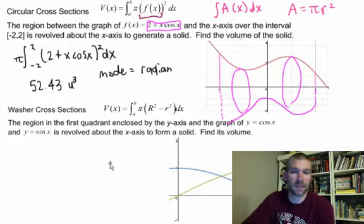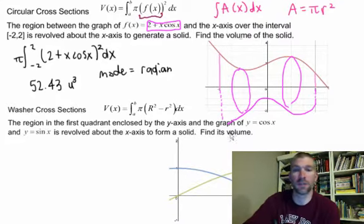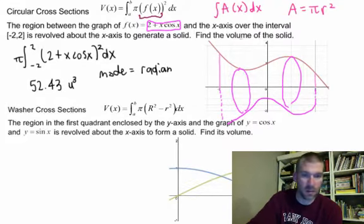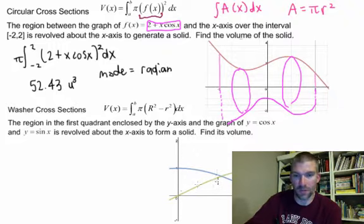Alright, we want to look at the region now in the first quadrant enclosed by the y-axis and the graph of y equals x cosine x and y equals, or just y equals cosine x and y equals sine x. We want to revolve that around the x-axis to form a solid.